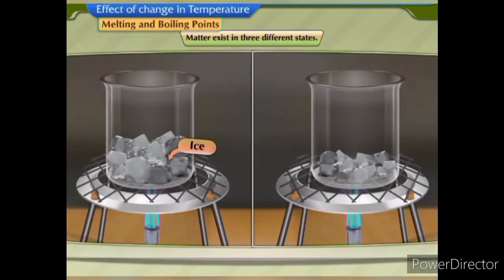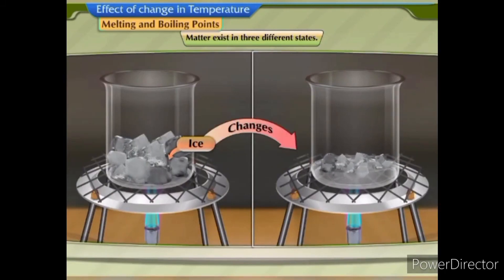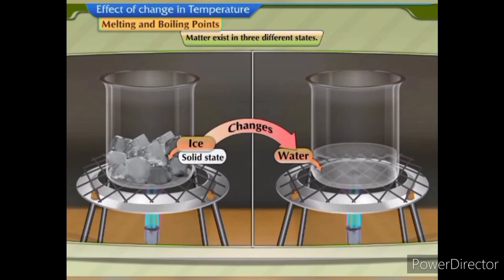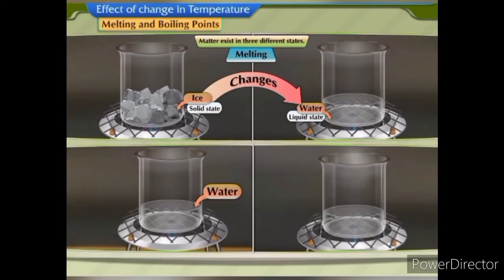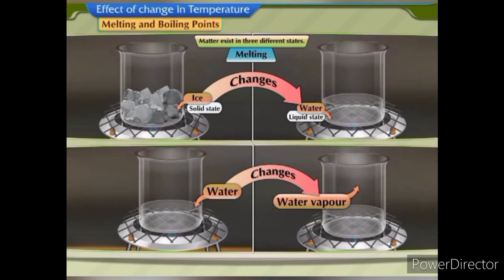On heating, ice changes into water. This process by which a substance changes from solid state to liquid state on heating is called melting. Similarly, water on heating changes to water vapour. This process by which a substance changes from liquid state to gaseous state on heating is called vaporization.